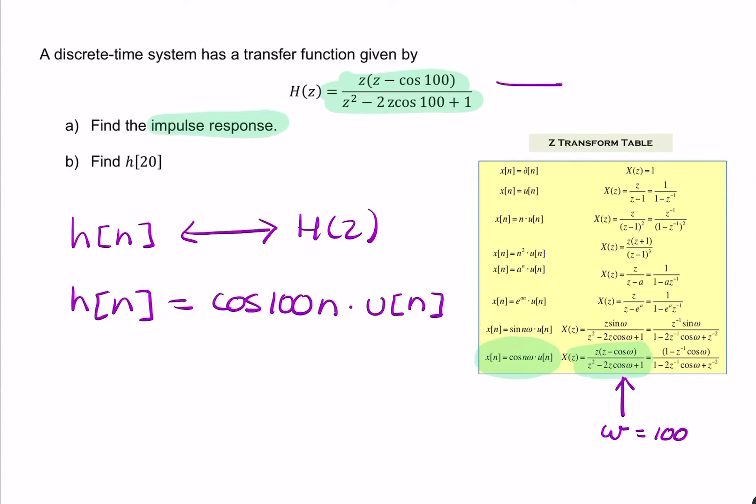Now, part B asks for a particular value, H of 20. So what's the value of H of N when N happens to be 20? So all we need to do is substitute 20 there, and there. So you're looking for cosine 100 times 20.